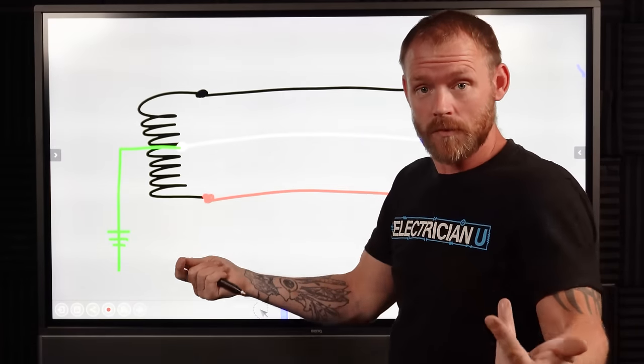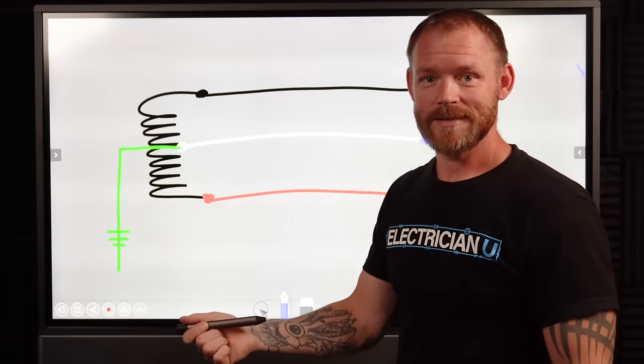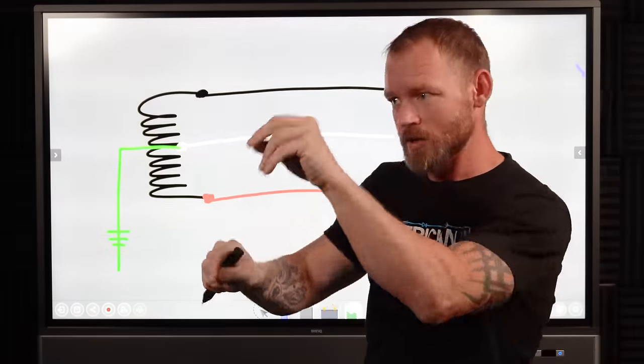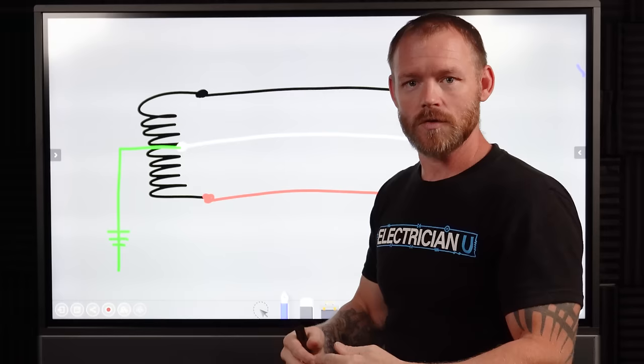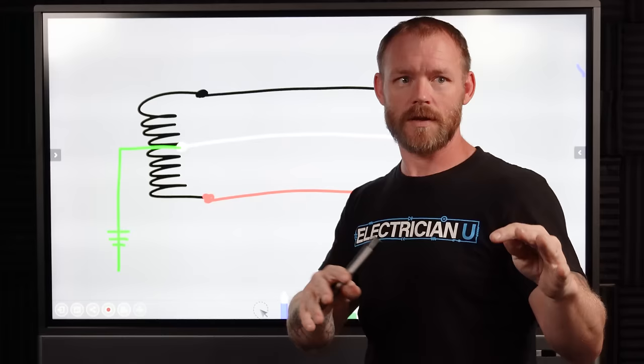That will flow through you and you can get shocked. But you can't just touch neutral and get shocked. Now, how neutrals are set up and where they're set up and where you're touching a neutral, you can get shocked touching a neutral. A lot of people will touch like two neutrals and they'll get shocked between them. And that's kind of the weird thing.